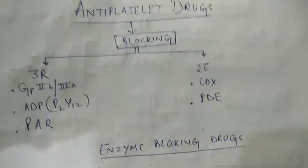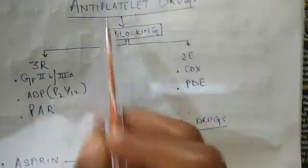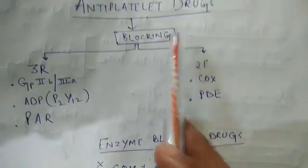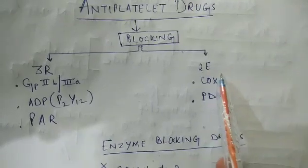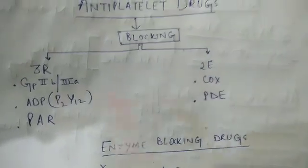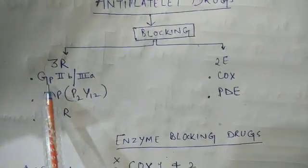Hello friends, today we are going to discuss antiplatelet drugs. The antiplatelet drugs act by blocking three receptors and two enzymes. The enzymes which are blocked are COX enzyme and phosphodiesterase enzyme.